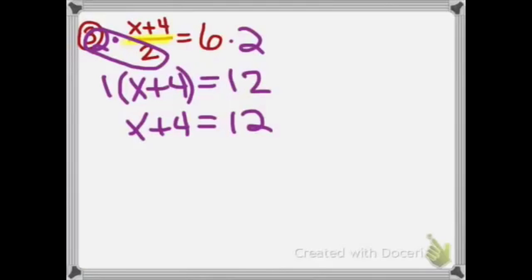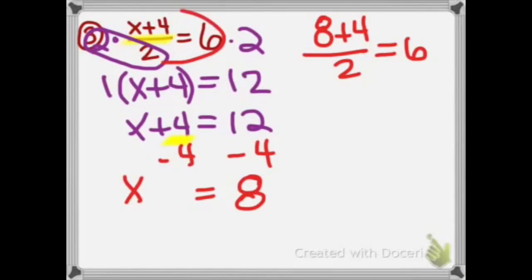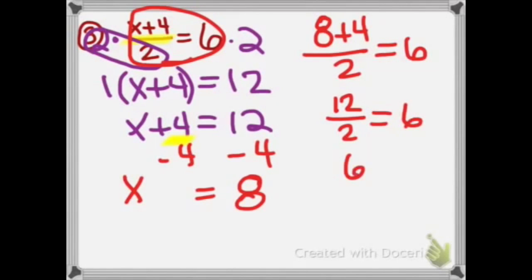Step 3 says add or subtract the term without the variable — that would be the plus 4. So we're going to do the opposite, which is subtract 4 on both sides. So x plus 0 equals 8, or just x equals 8. To check: 8 plus 4 divided by 2 equals 6. So 8 plus 4 is 12, and 12 divided by 2 is 6. That worked out.